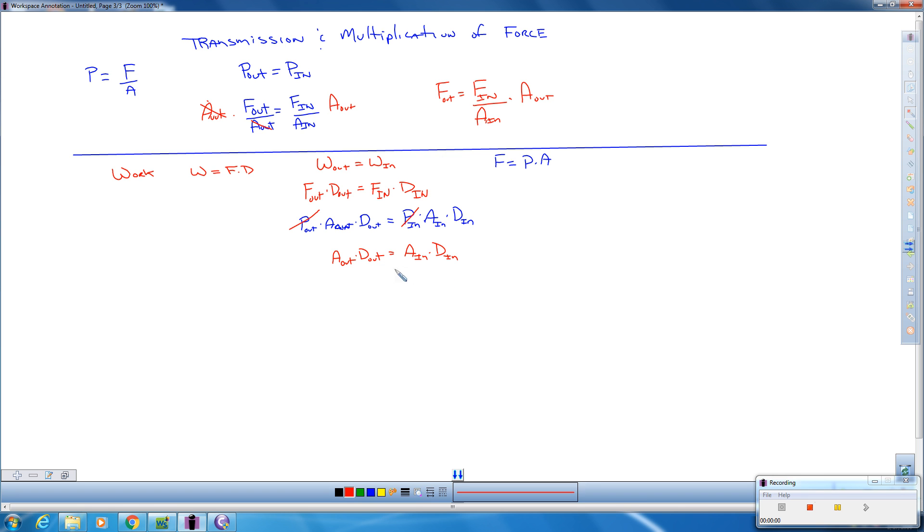So what we can do here is find whatever input distance we need to move something or output a certain amount. Say we want to, how much do we need to move our cylinder to get that output. So simple manipulation here. If we want to know our input distance, we're going to divide both sides by our input area.